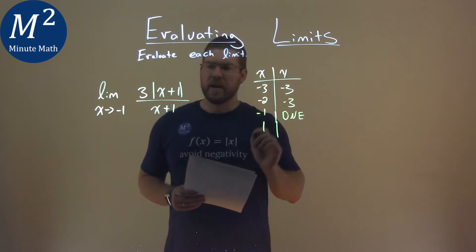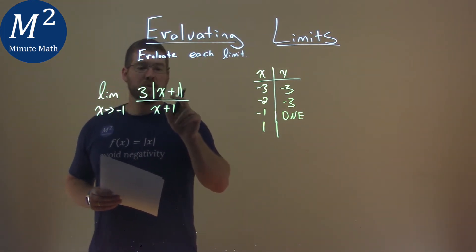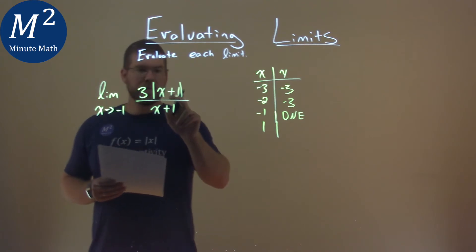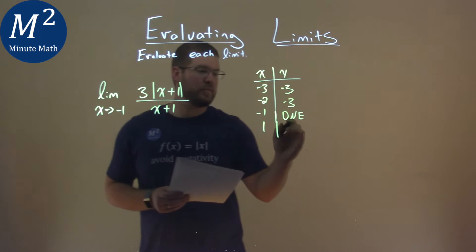But a positive 1, we put that in, what happens when we have a positive 1? Well, 1 plus 1 is a 2, and a 2 times a 3 is a 6. 1 in for x down here, 1 plus 1 is a 2, and then 6 divided by 2 is a positive 3.